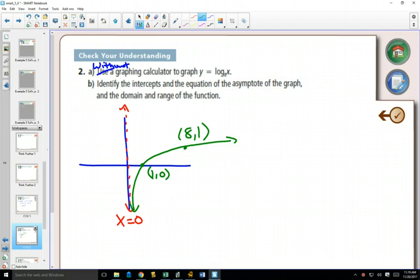If we are identifying the intercepts, well, it only has an x-intercept at 1. Again, the equation of the asymptote is x equals 0. Your domain is x is bigger than 0, not equal to 0 because of the asymptote. And the range is everything.